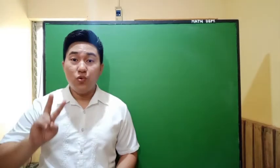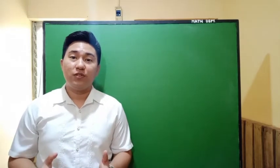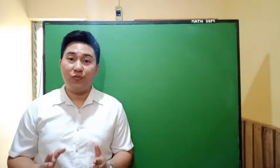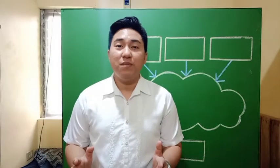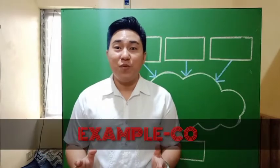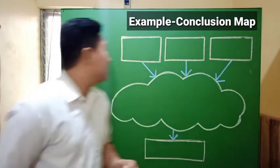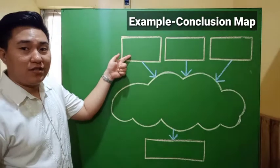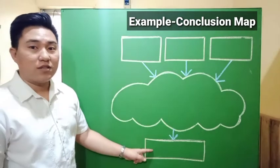From these two cases, we will be presenting examples, and from the examples we will generate a conclusion to represent the rule. We will be using the example-conclusion map. As you can see, we have here three boxes, a cloud, and another box.